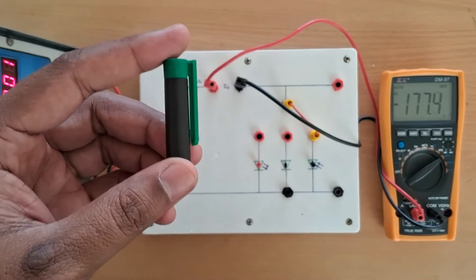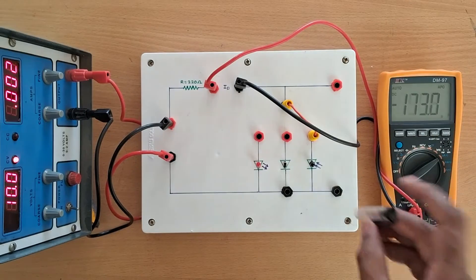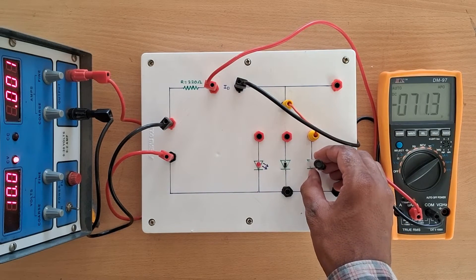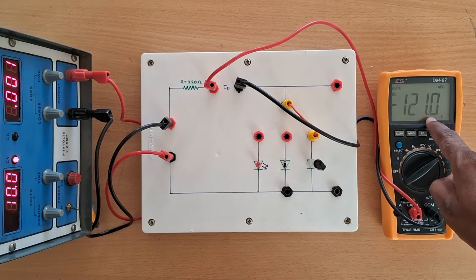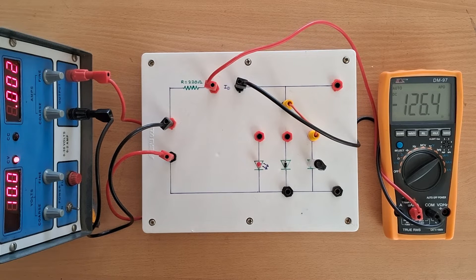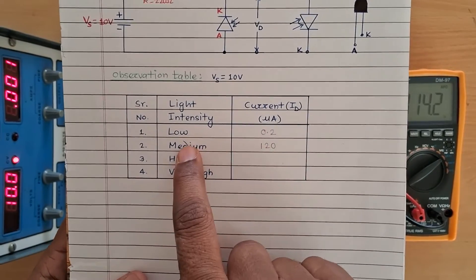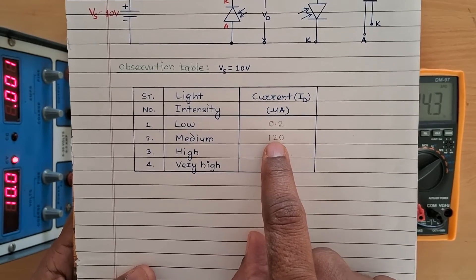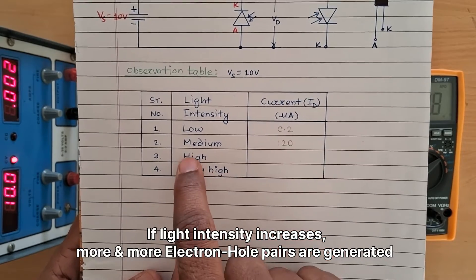Now I am replacing this non-transparent cap with a transparent cap so that some light will pass through. As soon as I place this cap over the photodiode, some light passes through and falls on it — we are getting nearly 120 micro-ampere current. For medium light intensity we are getting 120 micro-ampere; you can see that as light intensity increases, current is also increasing.